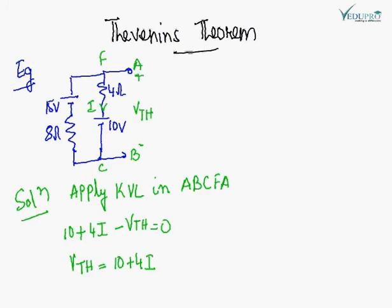So first of all, we give the name A, B, C, this is D and this is E. The circuit, we have the name of each node.